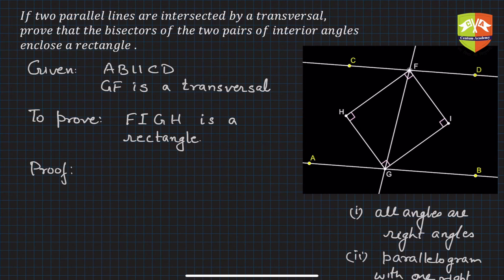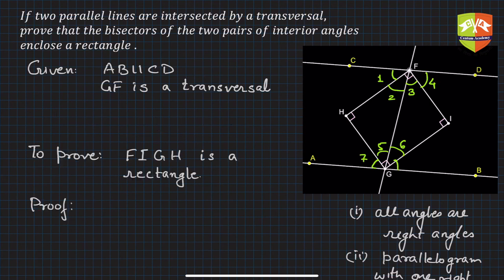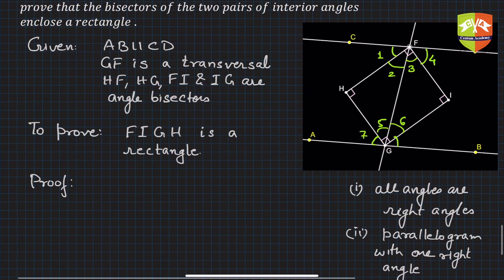Let me label the angles so identification is easier. Let these be angle 1, 2, 3, 4 at point f and angle 5, 6, 7, 8 at point g. We also note that hf, hg, fi, and ig are angle bisectors of their respective angles, as is evident from the figure. We have to prove that figh is a rectangle.